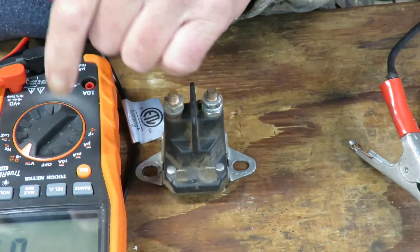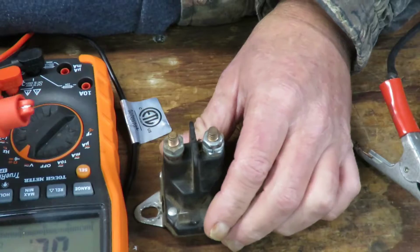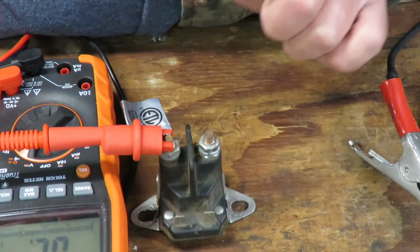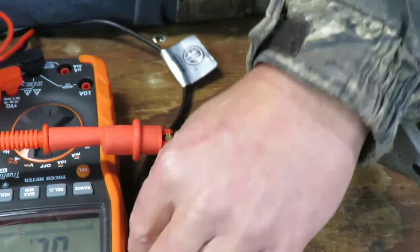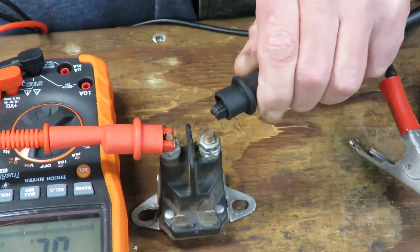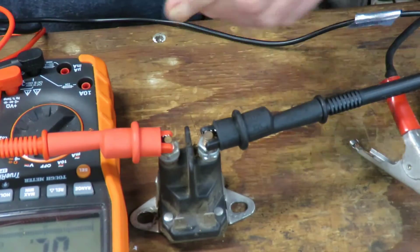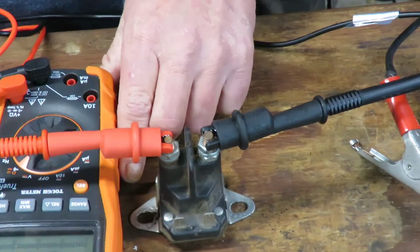So when I put this on ohms, this meter has a buzzer. So when I connect it one side to, it doesn't matter red on this side black on this side, it doesn't matter which way you do it, it's just a connection. So right now the solenoid is not engaged, so I'm getting nothing. It's just reading OL.